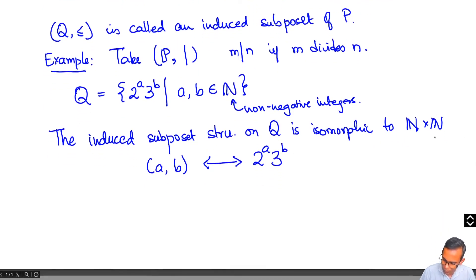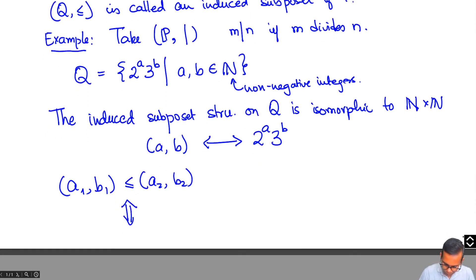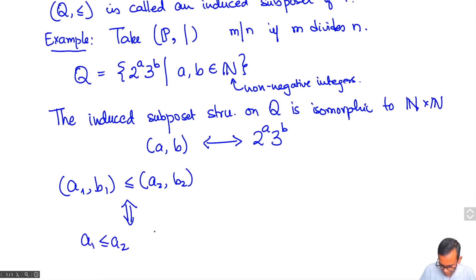And recall what was the partial order structure on N cross N. So we have A1, B1 is said to be less than or equal to A2, B2 if and only if A1 is less than or equal to A2 and B1 is less than or equal to B2. But that's the same as saying that 2 to the power A1, 3 to the power B1 divides 2 to the power A2, 3 to the power B2. And that's the divisibility partial order on Q which is a subset of P.